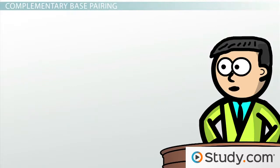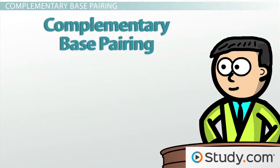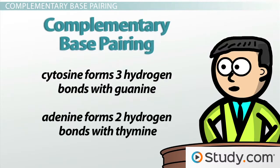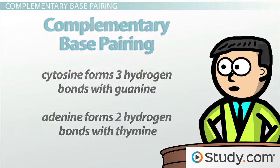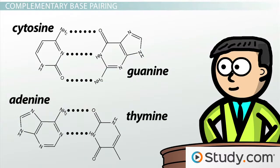It allows something called complementary base pairing. You see, cytosine can form three hydrogen bonds with guanine, and adenine can form two hydrogen bonds with thymine. Or, more simply, C bonds with G and A bonds with T.